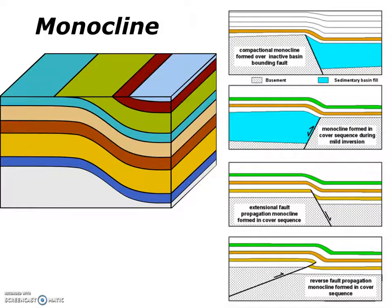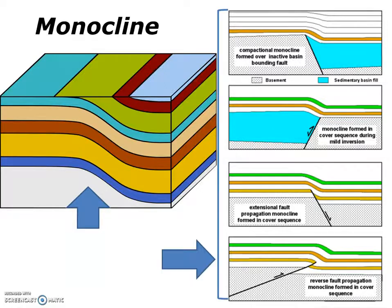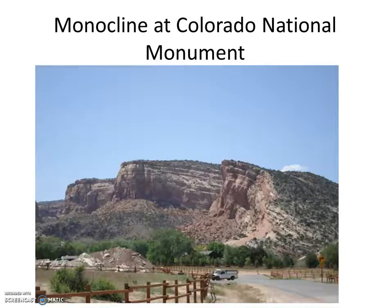Another type of fold that can form in areas of compression is known as a monocline. Monoclines form as large step-like folds in otherwise horizontal sedimentary strata, and they only have one limb. They are often the product of a reverse fault deep in the crust, where sedimentary rocks above the fault deform as a ductile solid, folding over the fault to produce a monoclinal fold. This is a picture of a well-known monoclinal fold at the Colorado National Monument in western Colorado — notice the dipping limb.